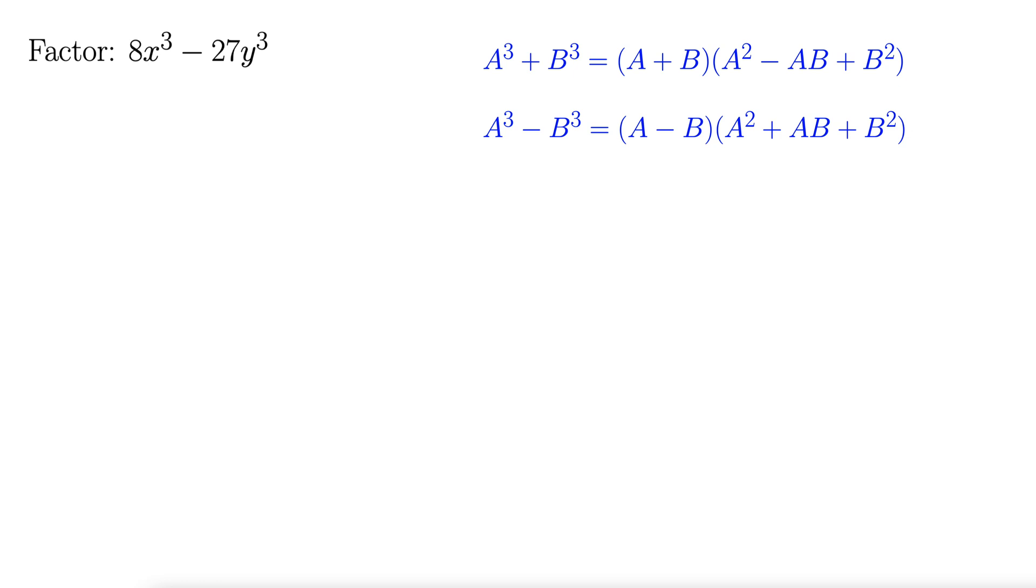Okay, this is of the form a cubed minus b cubed, and it might help to write this as 2x quantity cubed minus 3y quantity cubed, to very clearly see that it's of that form.